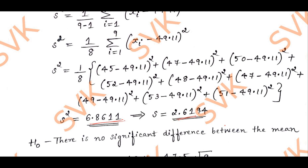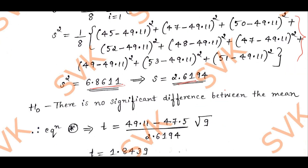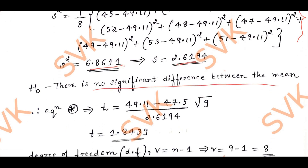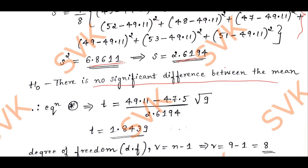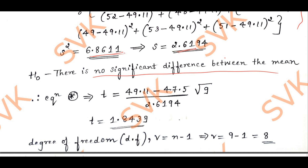For marks' sake, write down all these steps. For the calculation part, use the calculator method I showed to find both S and x̄. After noting the S value, define the null hypothesis: there is no significant difference between the means. Substituting x̄, μ, S, and n into the formula gives T = 1.8439.